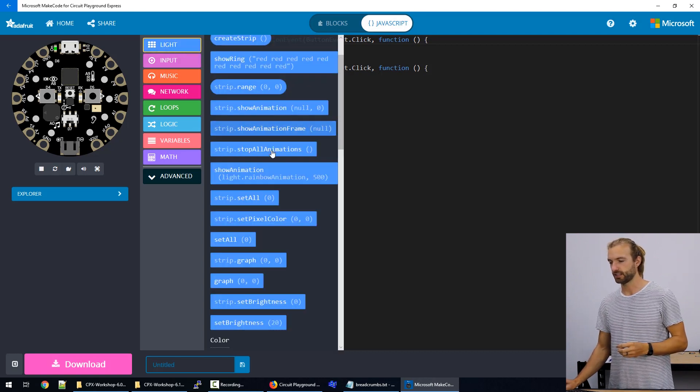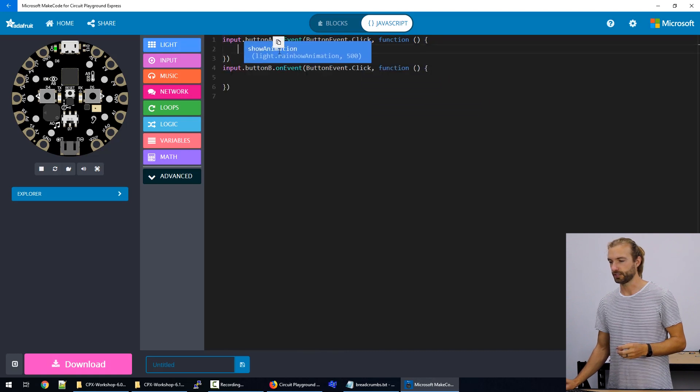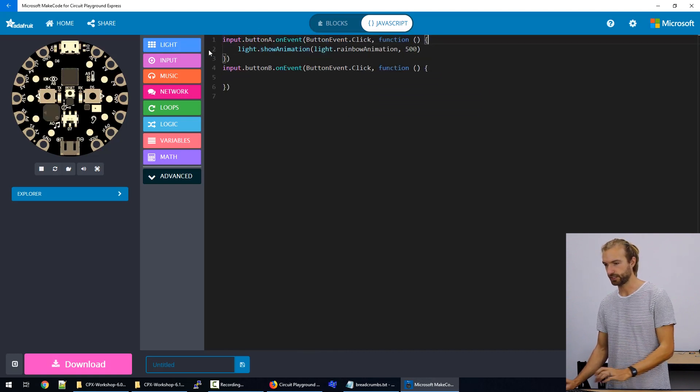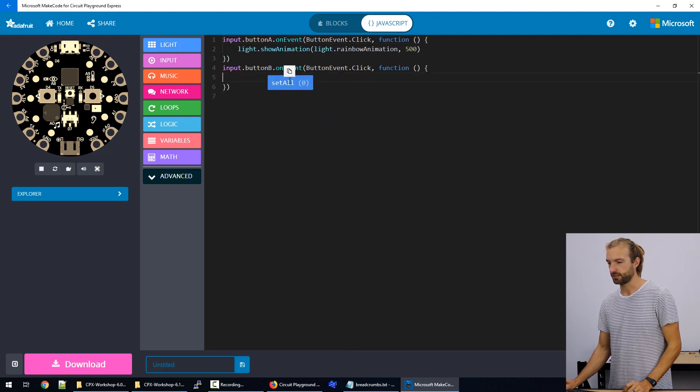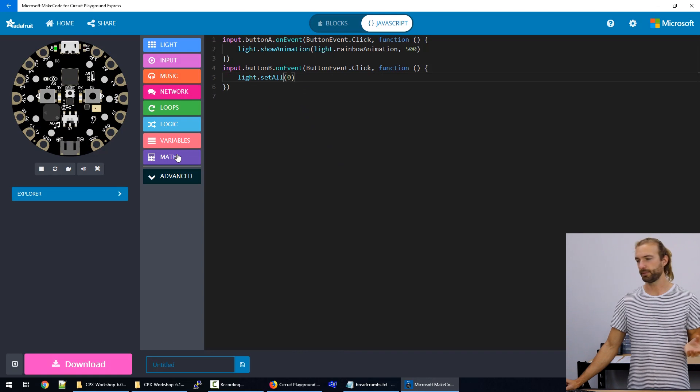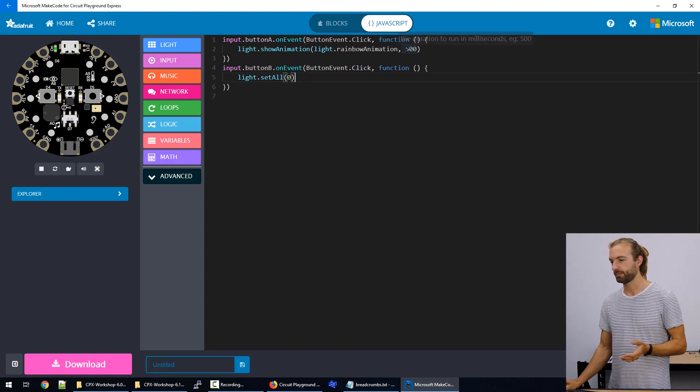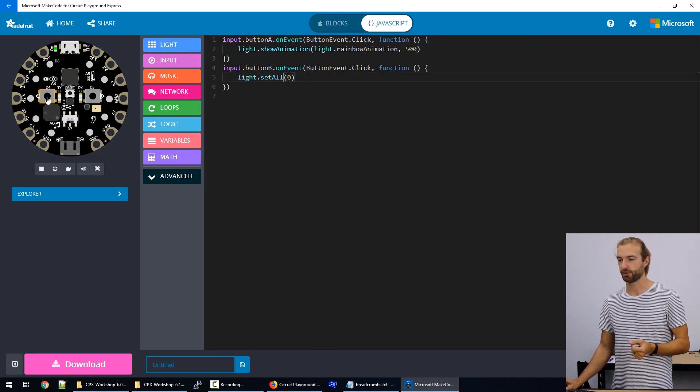And we can grab blocks of code from the menu options and drop them in. So rather than needing to look up what we want for, let's say, a rainbow animation, and then we'll set all the lights to zero, we can drag and drop like the blocks to really speed up the process of programming.